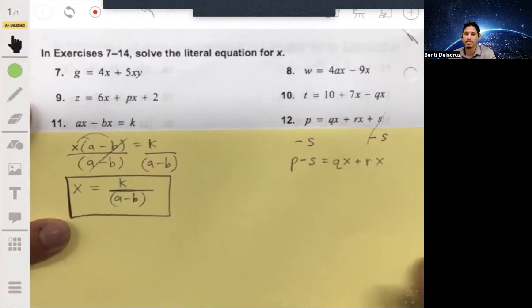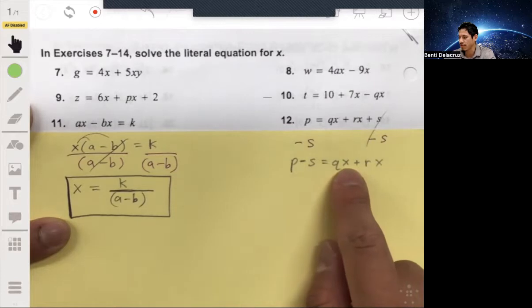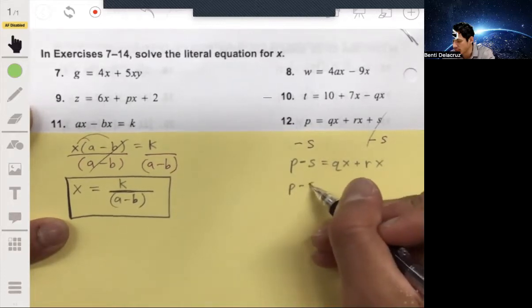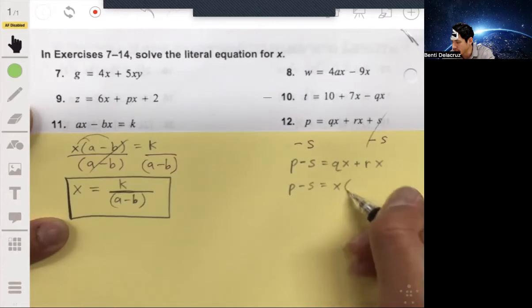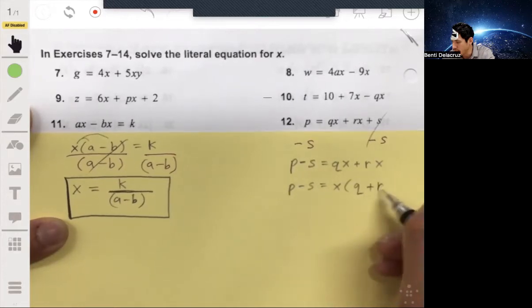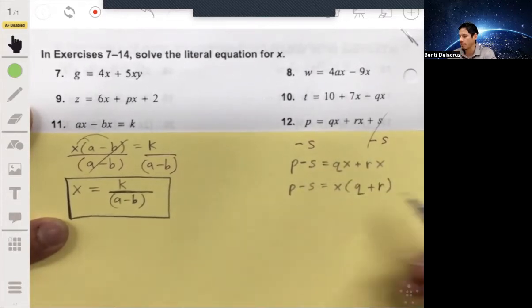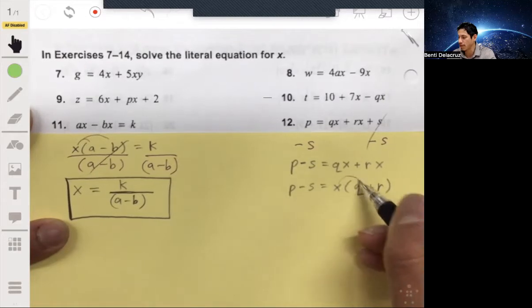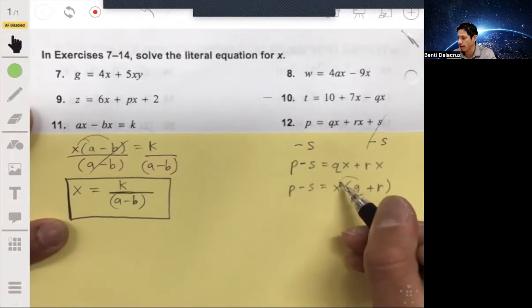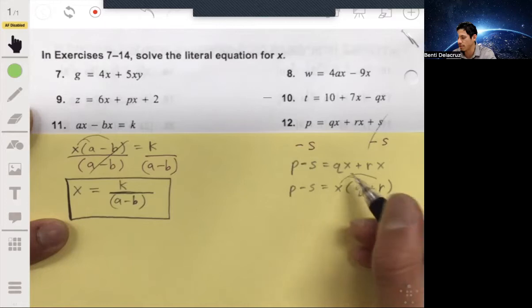Now, from here, we factor out the X from these two terms. So we'll get P minus S equals X times the Q plus an R. Because, again, if you were to multiply the X by the Q and the X by the R, so distribution, in other words, you would go back to QX plus RX. So this is called factoring.